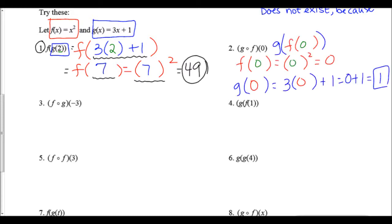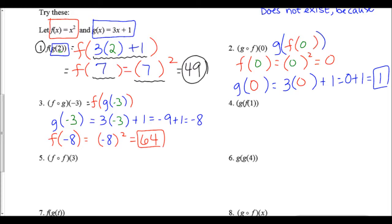Number two is g(f(0)): plug 0 into f, which gives 0, then plug that into g, which gives 1 as the final answer. Number three is f(g(-3)): plug -3 into g, which gives -8, then plug -8 into f, which gives (-8)² = 64.